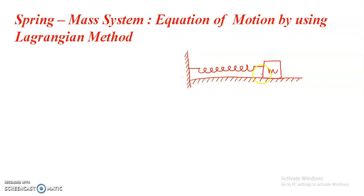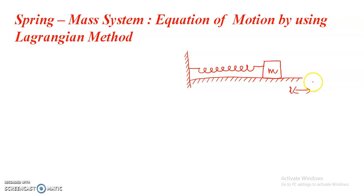So if we apply a force on the mass to stretch or compress the spring and then release the force, the motion of the system is simple harmonic. If X is the displacement of the mass at any instant, then the restoring force exerted by the spring on mass M can be determined.